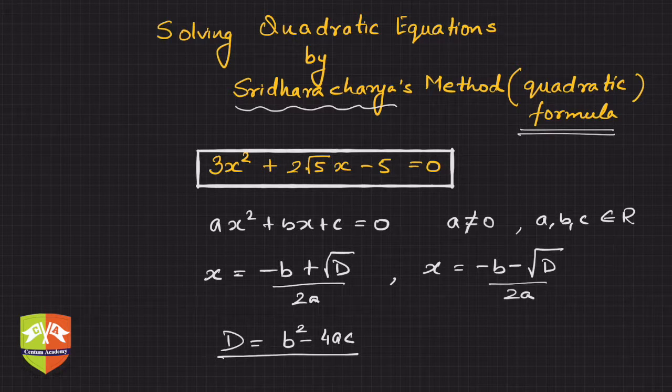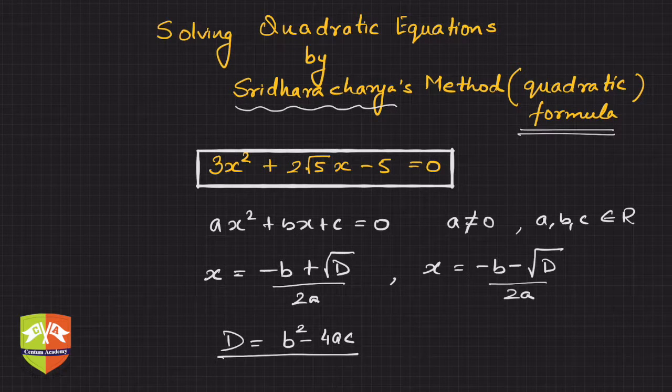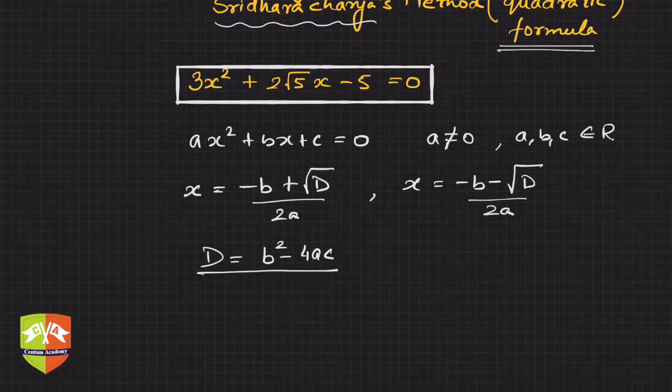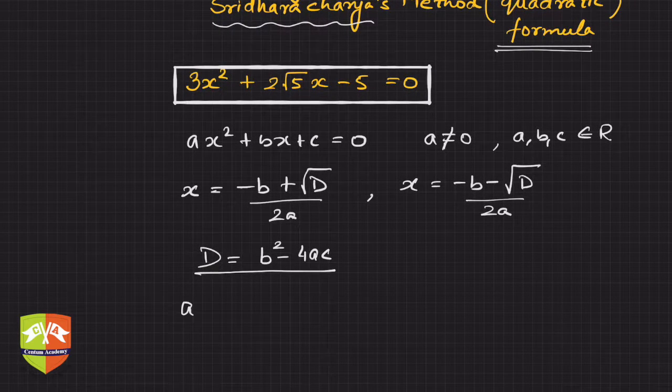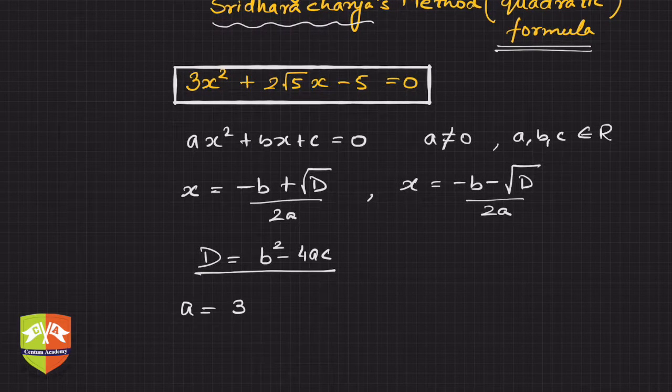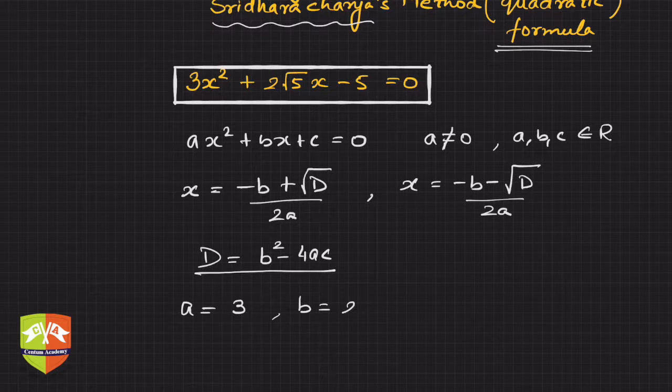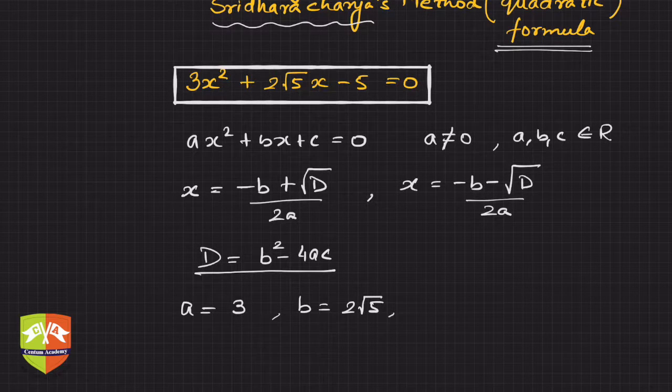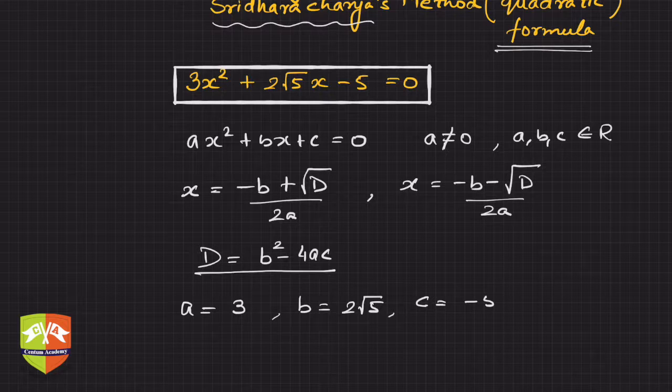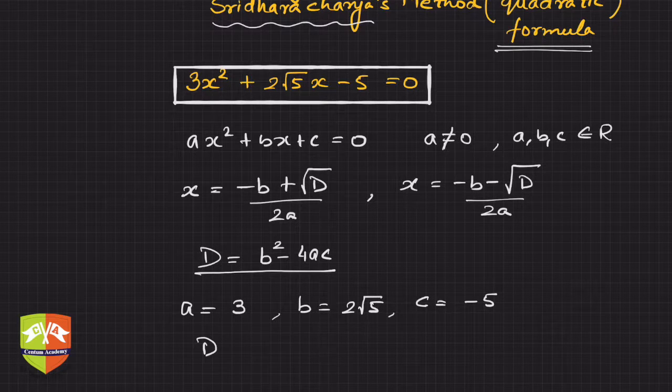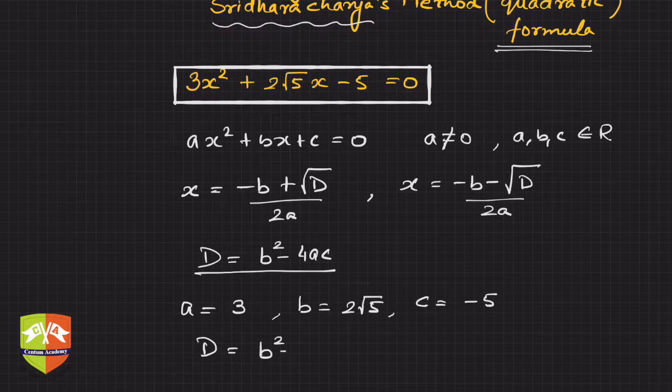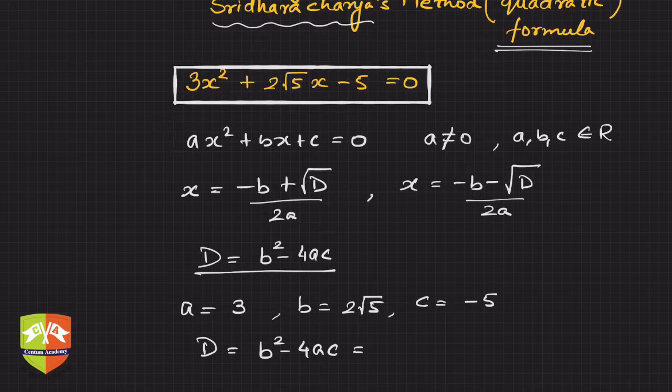Let us first see how to apply this formula. In this given equation, a is 3, b is 2√5, and c is -5.